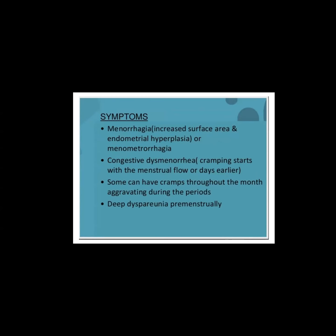There is heavy cyclical bleeding. The enlarged uterine cavity leads to endometrial hyperplasia, and impaired uterine contractions contribute to menorrhagia, as blood flow is not adequately controlled.